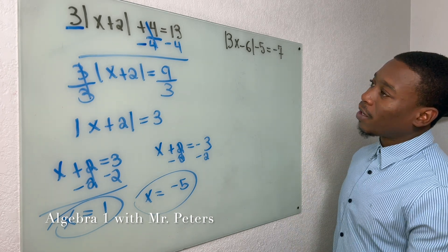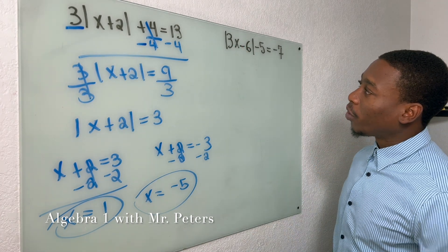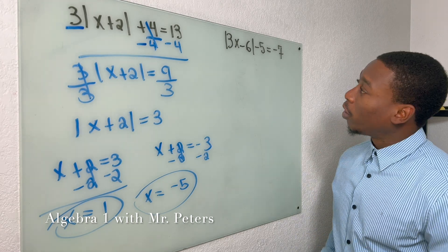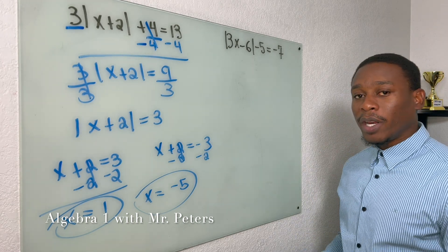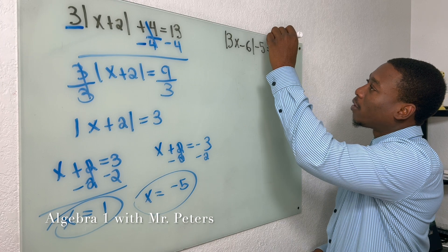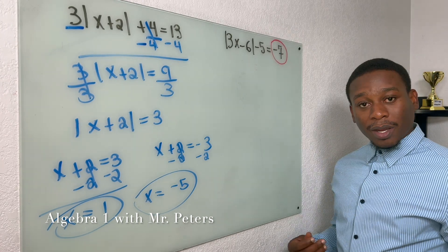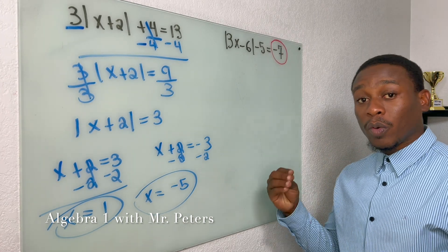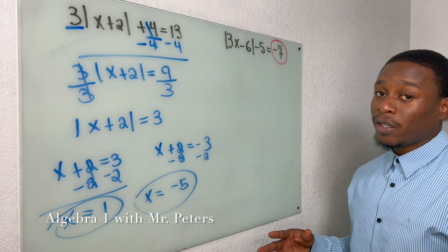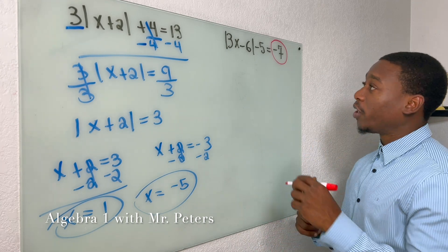Now in my second example we have the absolute value of three x minus six, we're going to subtract five, and this should be equal to negative seven. But let's just pay attention right here. When we're talking about equations, the absolute value cannot be negative. Right? So that should raise your eyebrow already.